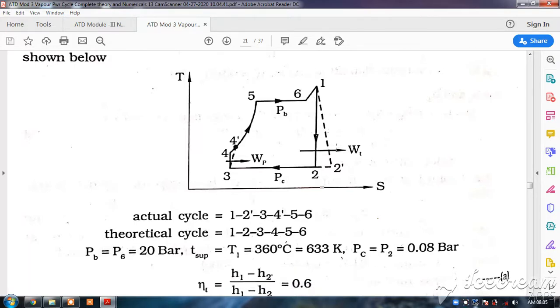Whereas the actual cycle is 1, 2 dash, 3, 4 dash, 5, 6. This 1 to 2 dash and 3 to 4 dash because the pump and turbine have got efficiency - 60% efficiency and 90% efficiency.